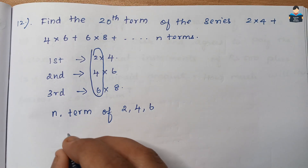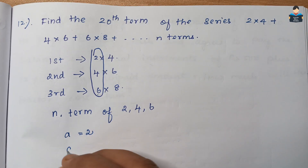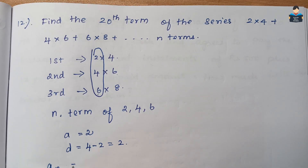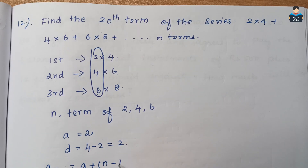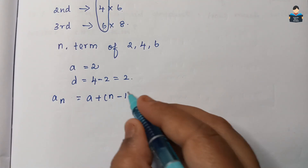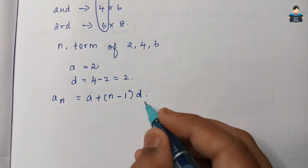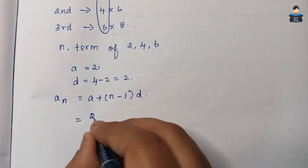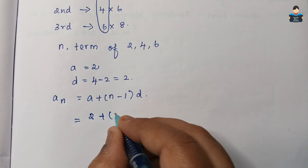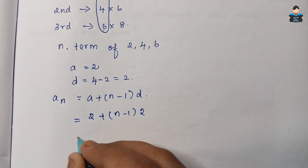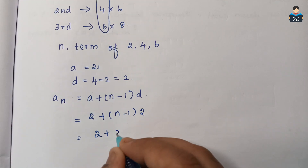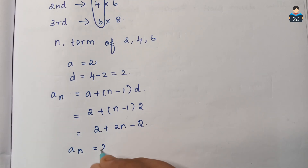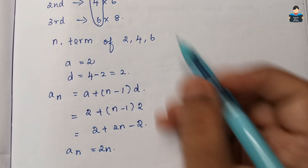For the sequence 2, 4, 6, ...: d = 4 − 2 = 2. So aₙ = a + (n−1)d = 2 + (n−1)×2 = 2 + 2n − 2 = 2n. So the nth term of 2, 4, 6, ... is 2n.